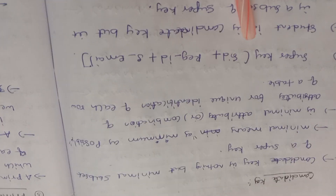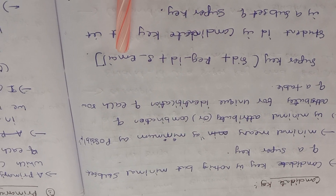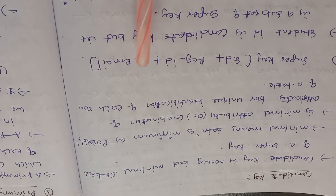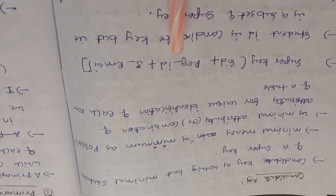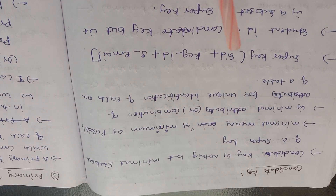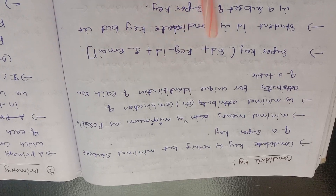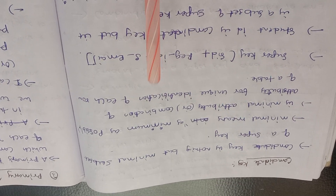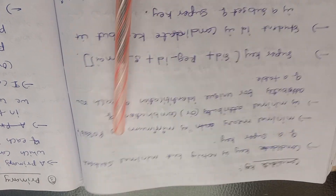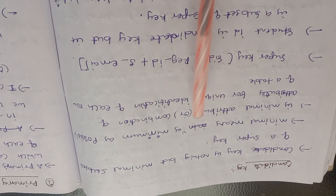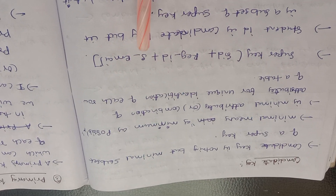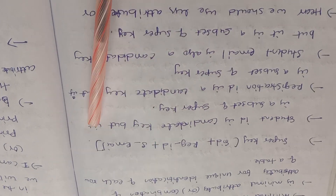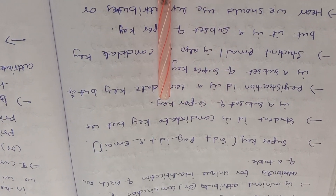If we have a super key with attributes like student ID and registration ID, the minimal means using the minimum attributes possible for unique identification. A super key with fewer attributes that still uniquely identifies rows is a candidate key.